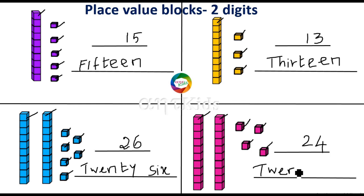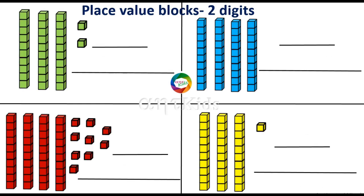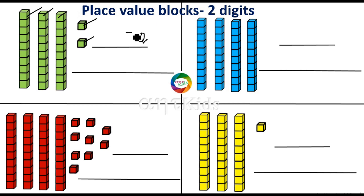What is the spelling? T-W-E-N-T-Y, 20, F-O-U-R — 24. Next one: here how many one-blocks are here? One, two — two one-blocks are there, so you have to write two in the ones place. And how many tens blocks are there? Three tens blocks, so you have to write three in the tens place. This represents the number 32.